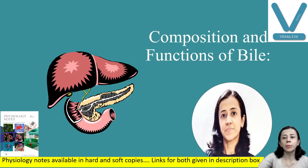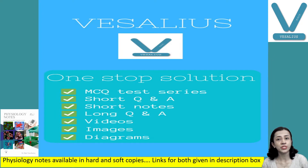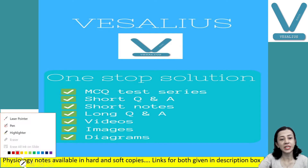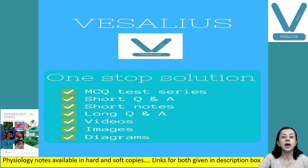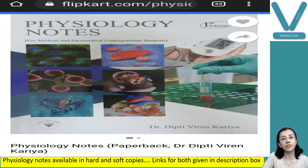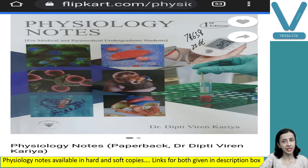Today we will discuss about composition and function of bile. Before starting my class, I would like to inform you all that you will get soft copies of all my notes. Soft copies are available on the application Vesalius. You have to download the application from Play Store and subscribe it. For hard copy, you can order my book available on Flipkart and Amazon. The link is given in the description box. You can join us on our WhatsApp group also — the number is 7863822668.